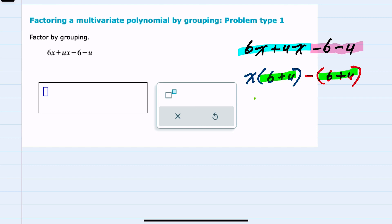So if I factor out a 6 plus u, what's left? In the first term, factoring out the 6 plus u leaves me with the x. And from the second term, factoring out the 6 plus u, I still have the minus, and I have a 1 placeholder. So my factored expression is (6 + u)(x - 1).